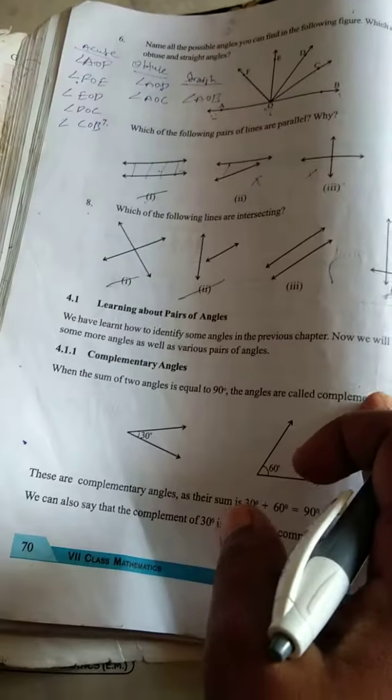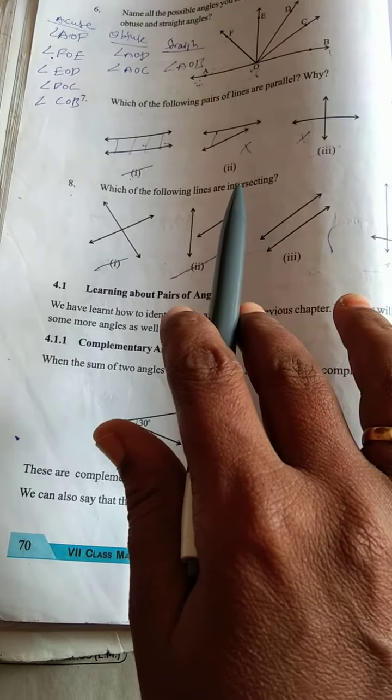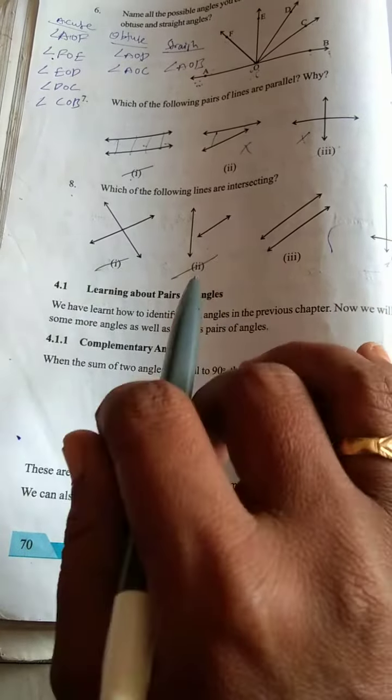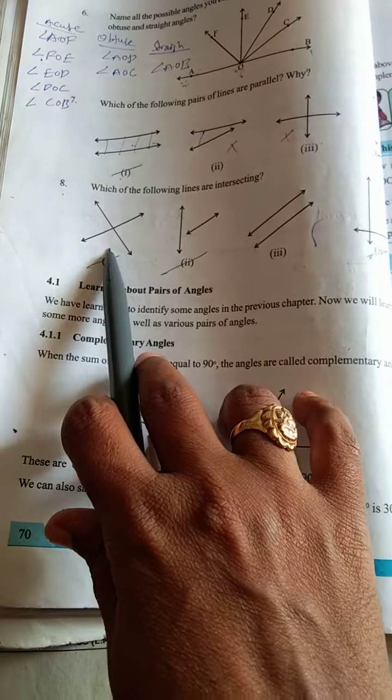Which of the following lines are intersecting? Intersecting means the lines, two lines have a common point. Intersecting lines - see, intersecting lines. One is the intersecting line.